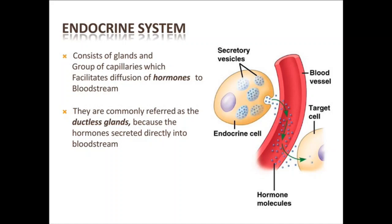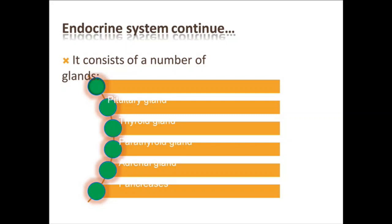In general, a gland selects and removes material from the blood, processes it, and secretes the finished chemical product for use somewhere in the body. This gland selects material, removes it from the blood, processes it, secretes it, and the chemical products are used wherever needed in the body. The endocrine system is so important that it affects almost every organ and all cells of our body.